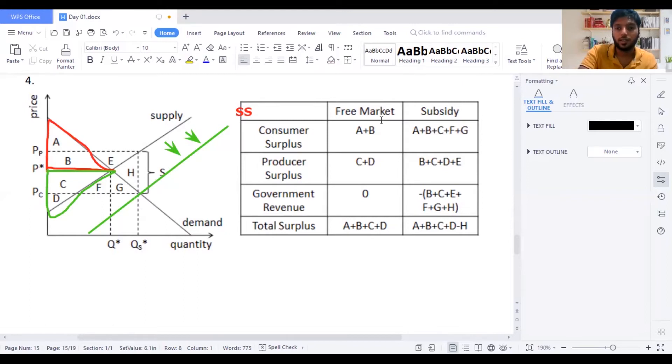Now you might see, they are saying free market, before the subsidy happened, he had A plus B. The consumer surplus was A plus B, which is this area. But after the subsidy has taken place, you might see, listen to this very carefully, guys. How does this actually affect the consumers? Because there is a subsidy, it's a help for the consumer. From here, it is not A and B now.